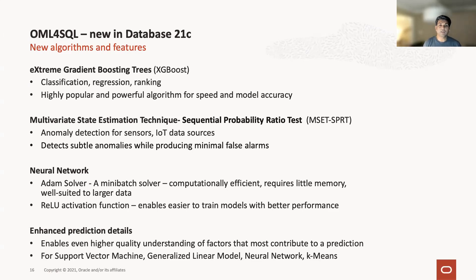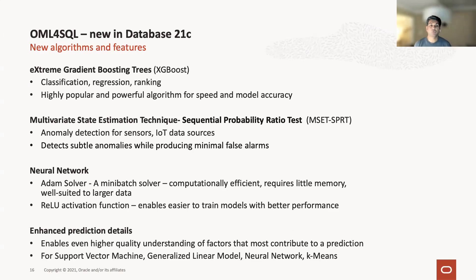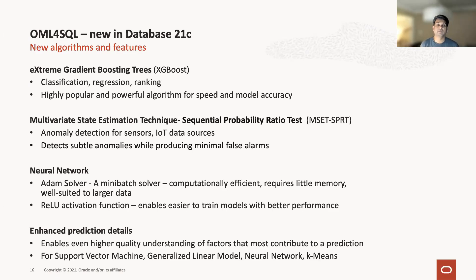The next one is something we developed called Multivariate State Estimation Technique. What it does is anomaly detection when trying to produce a minimal amount of false alarms. It's very useful for sensor and IoT data. If you're looking for anomalies in sensor or IoT data, this algorithm tends to work very well and is far easier to train — and that's something we developed.